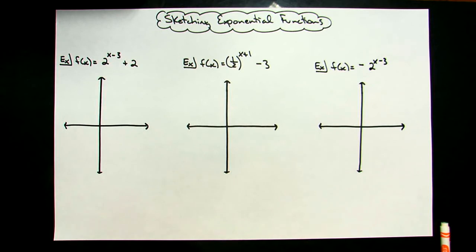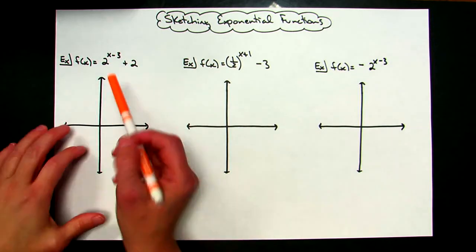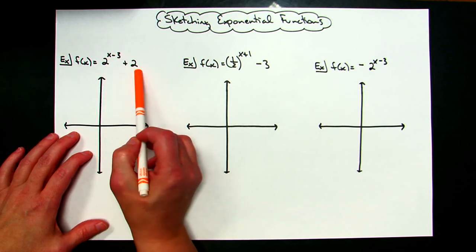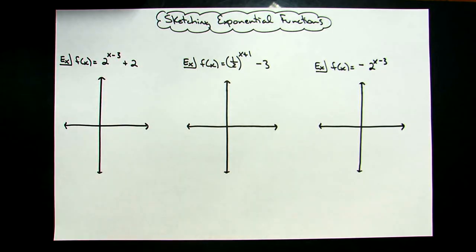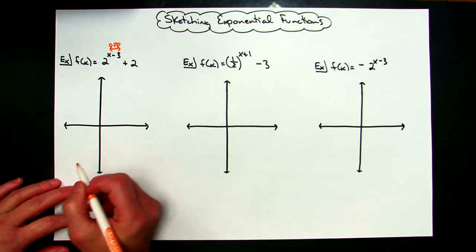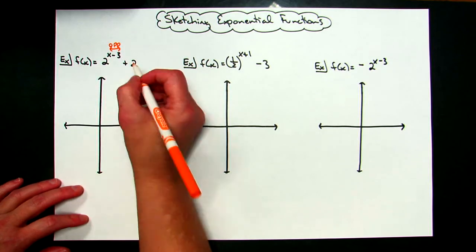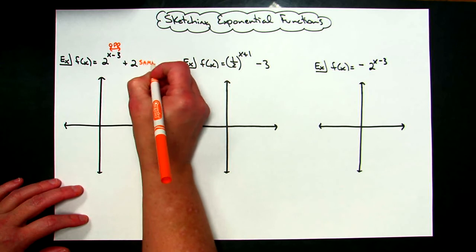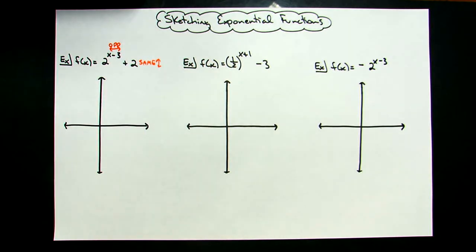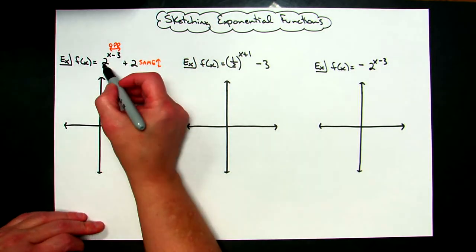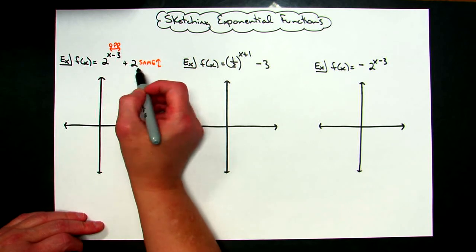Let's take a look at three functions we can sketch. On this first one, I've got them in pretty much general form. This would be my h value, and this would be my k value. As with all of our functions, the h value tells us how far we're going to move — opposite — left or right. So that minus three tells us I'm going to shift three to the right. And this k value out here is going to tell me how I'm going to shift — same — up or down, so the graph is going to shift up two. This graph is 2 to the x minus 3 plus 2, the exact same base graph I just showed you.